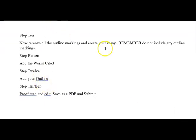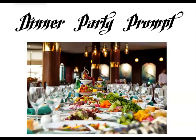Next, you're going to remove all the outline markings and create your essay. Remember, do not include any outline markings. And of course make sure that's all in Times New Roman, 12 font, double-spaced. Step 11 is to add the works cited below that — we all know how to do that from the very first experiences this semester. Next, add your outline to the bottom. And then the final step: proofread, edit, save this as a PDF, and submit. And that's it. Follow these handy step-by-step instructions and you will create an essay that some of you may not have thought you'd be able to do when you started this semester. It is going to be a thing of beauty and a masterpiece. So enjoy this project, have fun with it, and remember to follow the directions one step at a time.